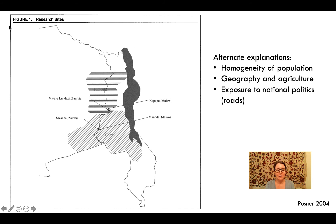There is one problem though, and that's that the border was drawn in 1891. Chiwas and Tambiukas moved across that border during the past 130 years, and it's possible that members of both groups who were interested in being part of a larger political group moved to Malawi during that time, and that those types of people might be more prejudiced towards other groups. Posner doesn't address the fact that the border has been around for a very long time.